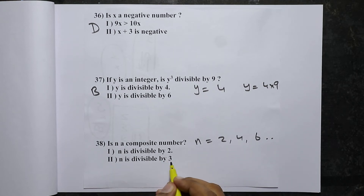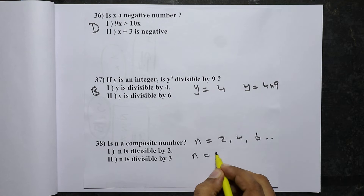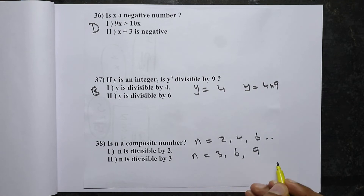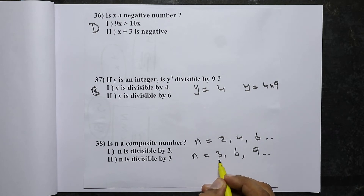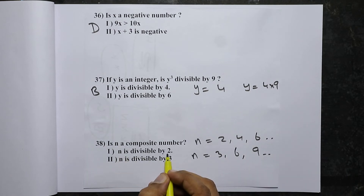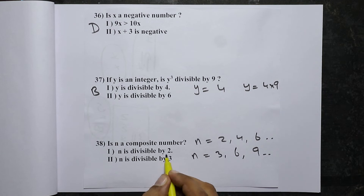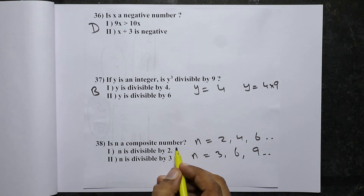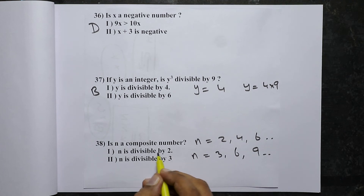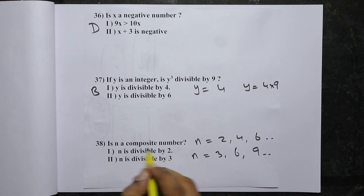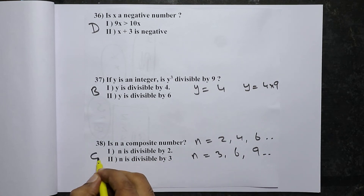The second statement says n is divisible by 3, giving possible values like 3, 6, 9, and so on. Again, n = 3 is prime while n = 6 is composite, so second statement alone also will not do. However, combining both statements means n is divisible by 6. If n is divisible by 6, it will definitely be a composite number. Hence C is the correct answer.